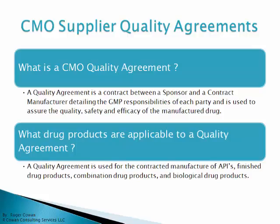I'd like to ask a couple of basic questions here. What is a CMO quality agreement? A quality agreement is a contract between a sponsor and a contract manufacturer detailing the GMP responsibilities of each party. It's used to assure the quality, safety, and efficacy of the manufactured drug.